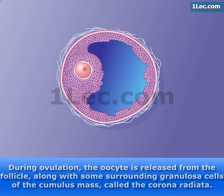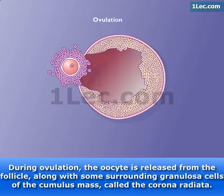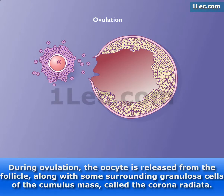During ovulation, the oocyte is released from the follicle, along with some surrounding granulosa cells of the cumulus mass, called the corona radiata.